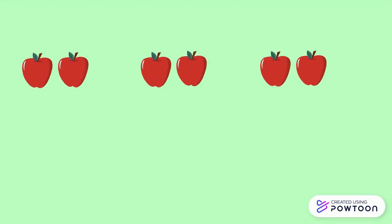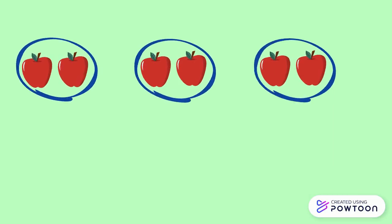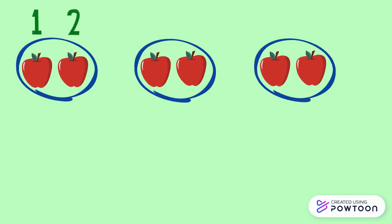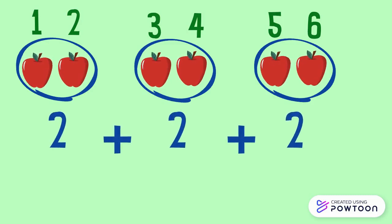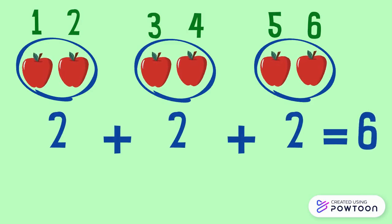Here we have three groups of two apples. If we want to know how many apples we have altogether, we can count them: 1, 2, 3, 4, 5, 6. So we have 6 apples altogether. We can also add the number of apples in each group: 2 plus 2 plus 2 equals 6. Notice that we have repeated the number 2 three times, so we can call this a repeated addition.